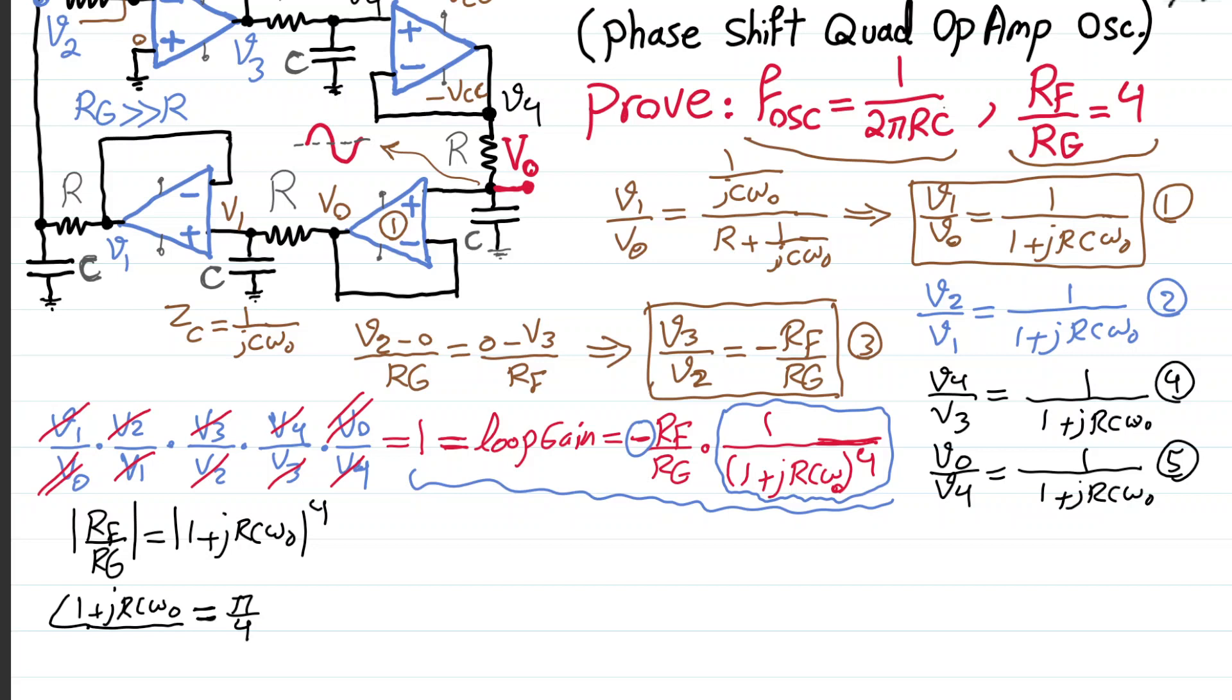That would result in cancelling out the negative sign. How do we get to phase of π over 4? It requires that the imaginary part, which is RCω naught, to be equal to real part in order to get a phase of π over 4. So, RCω naught should be equal to 1. The real part should match imaginary part.